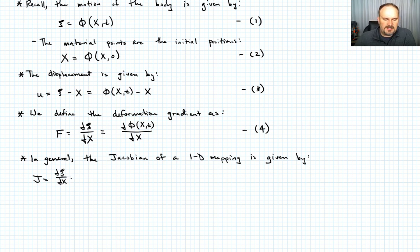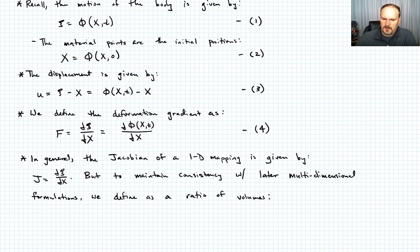But for the purposes of this problem and trying to maintain consistency with when we move to 3D, I'm going to try to define it as a ratio of volumes instead of a ratio of lengths. So in this case, we'll say J is going to be equal to A times Δξ over A₀ times ΔX. That would be how we would do that.